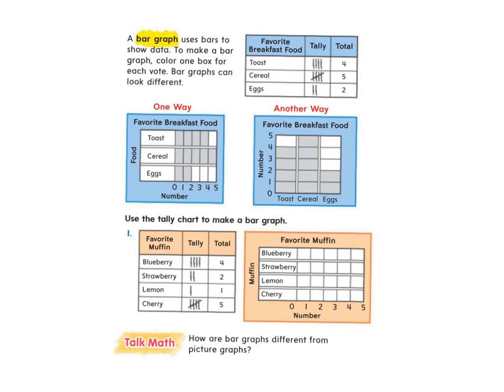There are two different ways that you can show a bar graph. You can show it horizontally, meaning sideways, left to right. Or you can show it vertically, meaning up and down, okay? Either way is an appropriate way to show the bar graph.